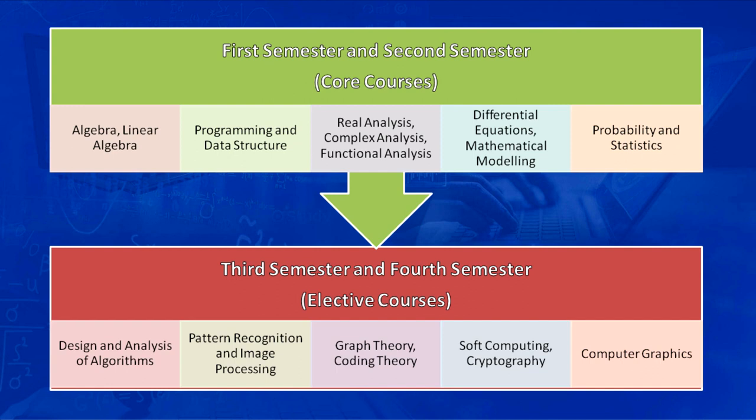The 26 credits of elective courses are on graph theory, image processing, soft computing, cryptography, coding theory, and computer graphics.